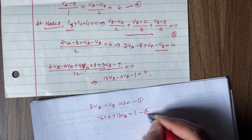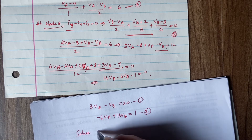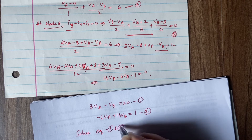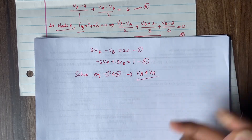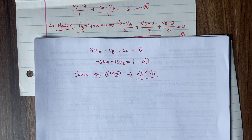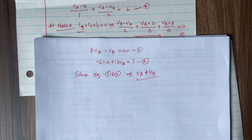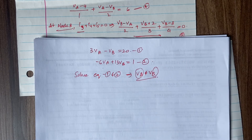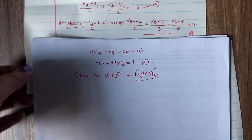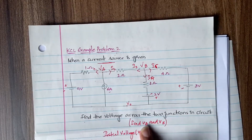So Equation 1 is: 3Va − Vb = 20, and Equation 2 is: −6Va + 13Vb = 1. Now solve these two simultaneous equations for Va and Vb. I have answers for both but I'm not completely sure they are correct — I'll check and upload the correct answers in the comment section or description box. You try solving them too and share your answers in the comments so we can compare.